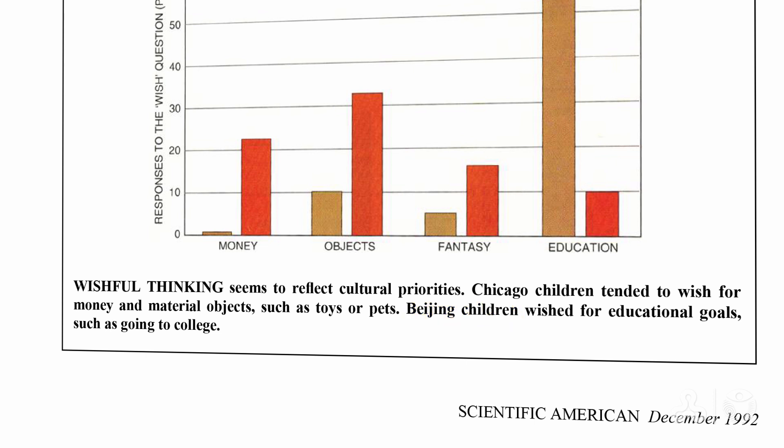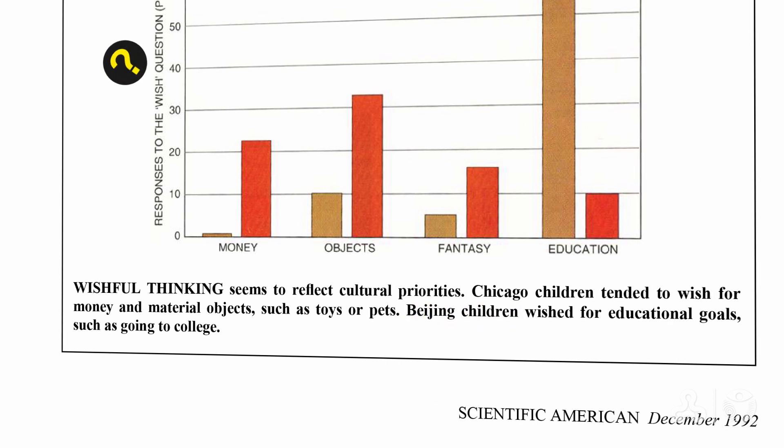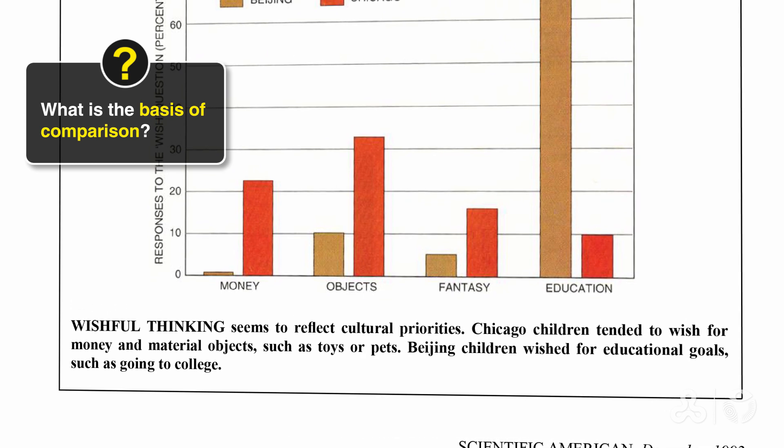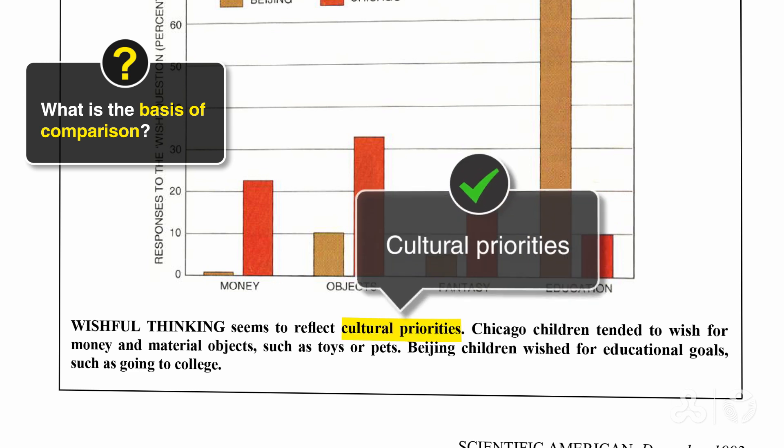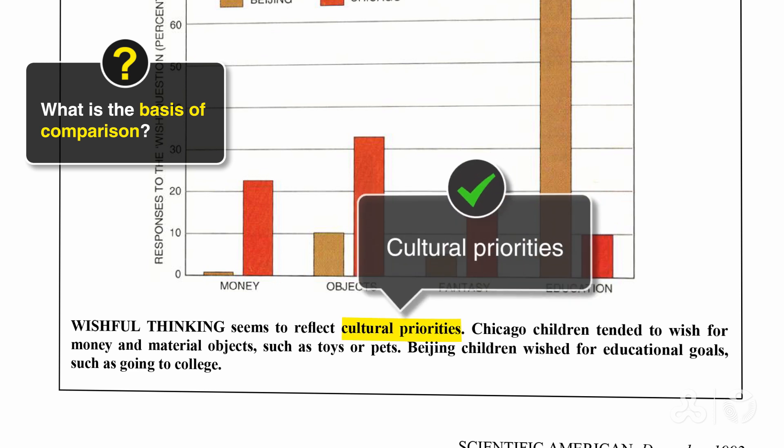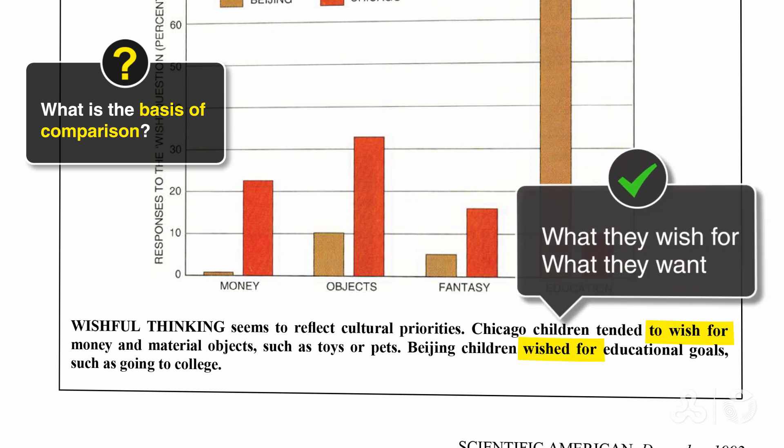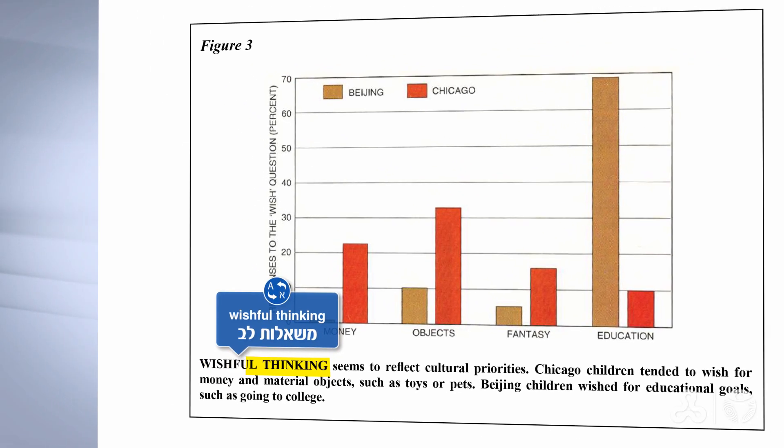Now, the question is, what is the basis of comparison? And the explanation under the graph tells us exactly what it is. We see that we're talking about cultural priorities. We see that we're talking about what they wish for or what they want. We see wishful thinking.